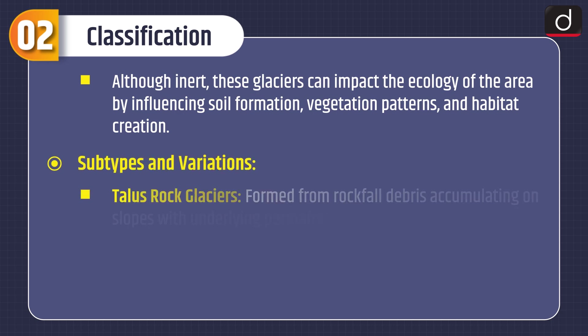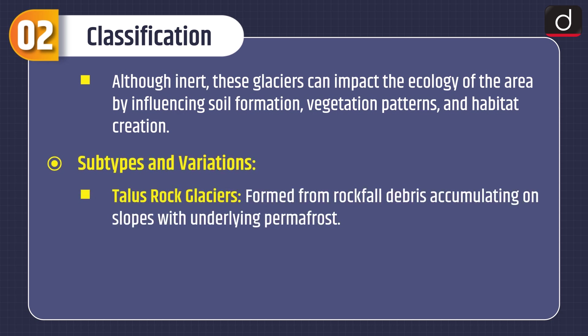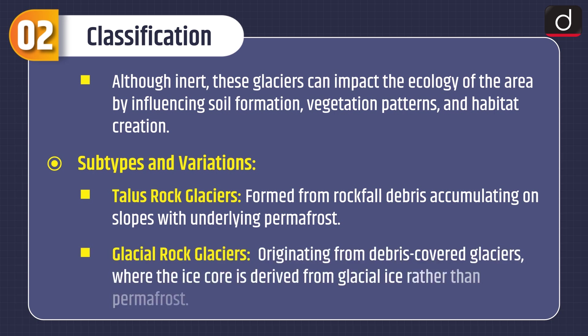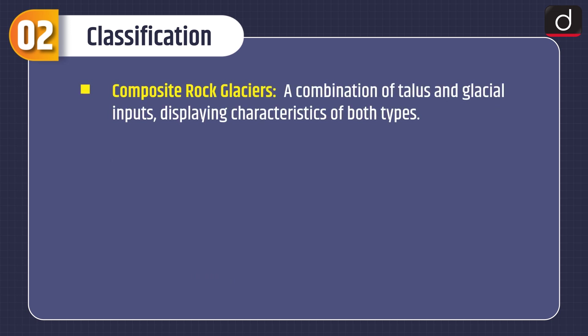Subtypes and variations include: Talus rock glaciers, formed from rockfall debris accumulating on slopes with underlying permafrost; Glacial rock glaciers, originating from debris-covered glaciers where the ice core is derived from glacial ice rather than permafrost; and Composite rock glaciers, a combination of talus and glacial inputs displaying characteristics of both types.